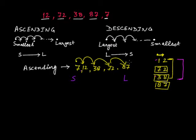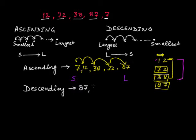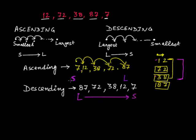The exact reverse of this would be the descending order. So for descending order: 87, 72, 38, 12, and 7 — starting from the largest number until you get the smallest.